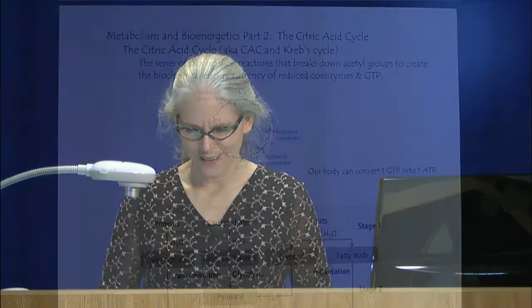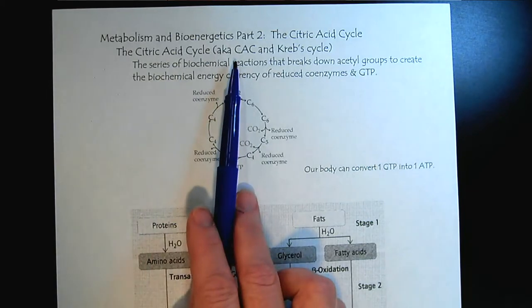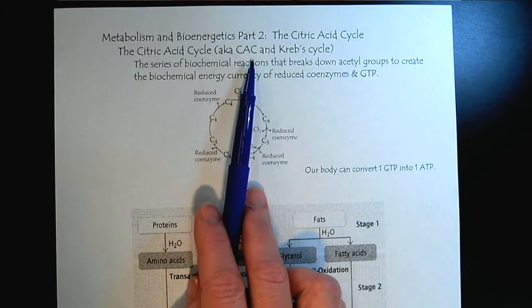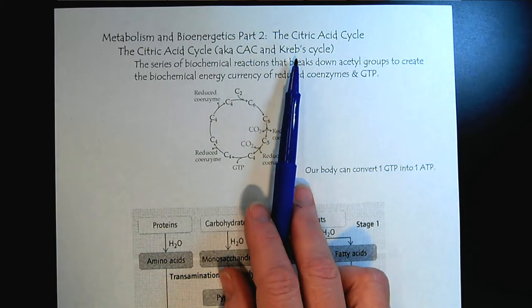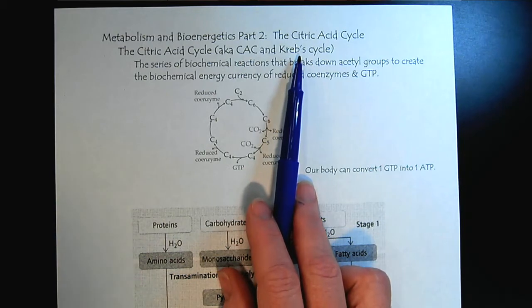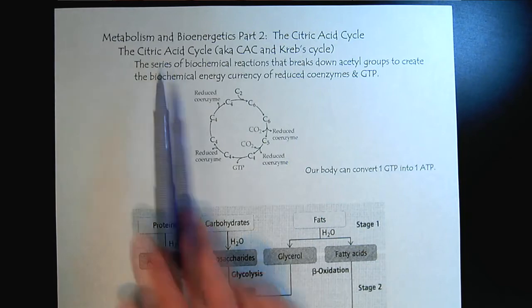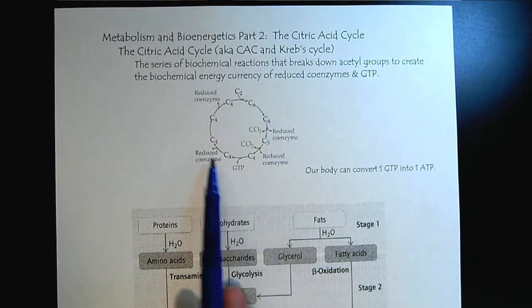Welcome to Metabolism and Bioenergetics, Part 2. In this tutorial, we'll look closely at the citric acid cycle. Let's get started. So the citric acid cycle, we'll abbreviate it CAC. Krebs was the gentleman that first discovered it, so it's often referred to as the Krebs cycle. This is the older name, and citric acid cycle is replacing it. This is a true cycle, a circular pathway.